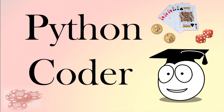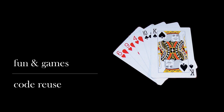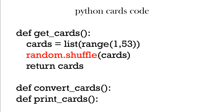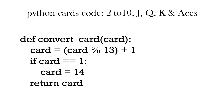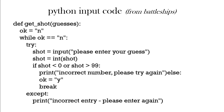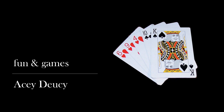Python coding fun with reuse. This is part of our fun and games series. Previously we wrote code involving games with playing cards. We had code to shuffle the pack, create the 52 cards, and show the cards such as the Jack, Queen, King, and Ace. From the battleships game we also got a number from a user and made sure that input was correct. Now we can reuse all of that code for a new game called Acey-Ducey.